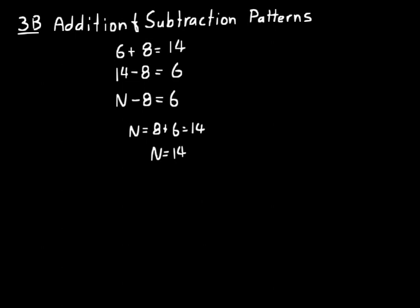What if we had 14 minus n equals 6? We wouldn't say 14 plus 6 is 20, because 14 minus 20 does not equal 6 — we know that's not right. On a problem like that with a missing number in that position, we'd just do another subtraction problem: 14 minus 6 equals 8, so n equals 8. We can always check: 14 minus 8 does equal 6, so that's the answer.